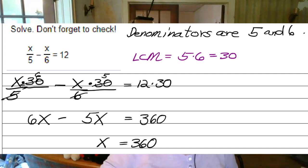Well, 5 goes into 30 6 times, so we have x times 6, which is 6x. 6 goes into 30 5 times, so we have minus 5 times x. And 12 times 30 is 360. If I have 6x's and I take away 5x's, I'm left with 1x. x equals 360. And it's that easy.